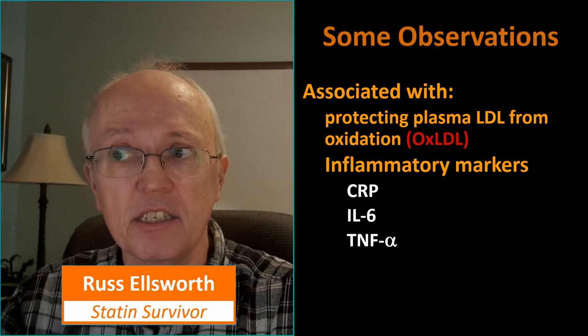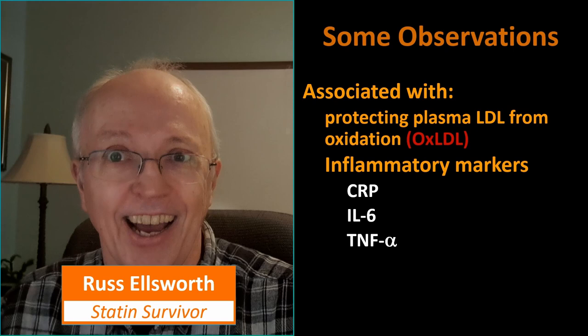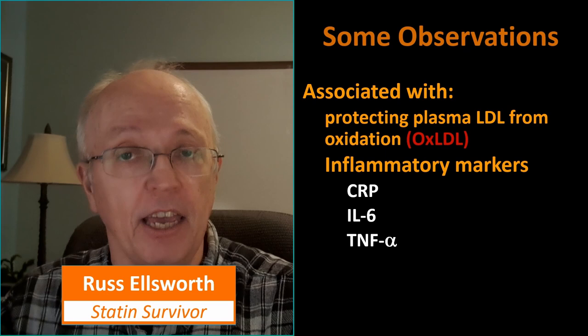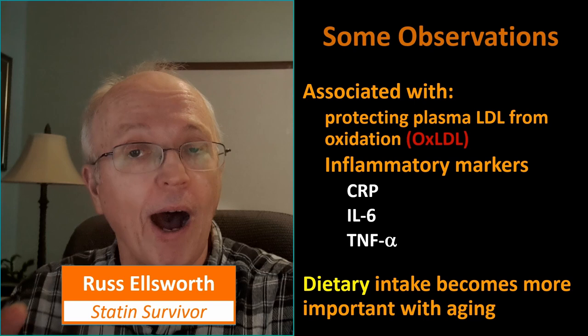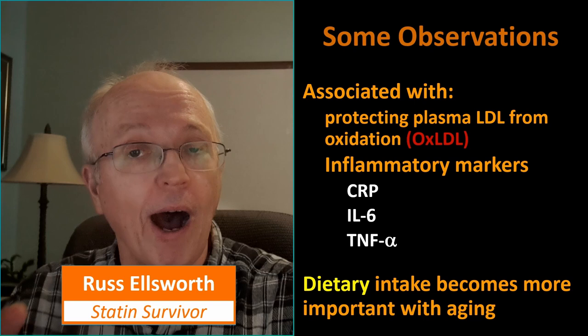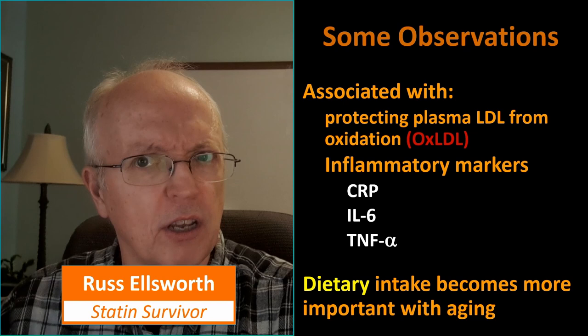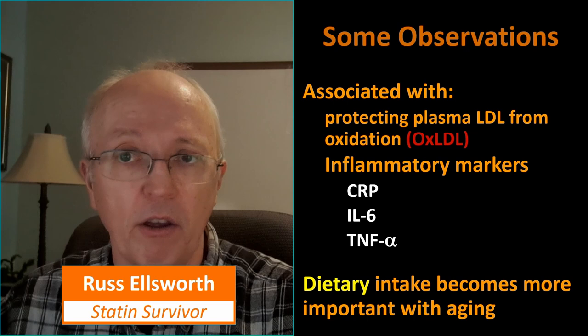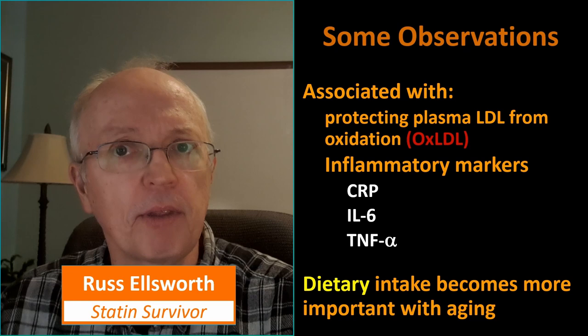CoQ10 supplementation reduces inflammatory markers such as C-reactive protein, interleukin-6, and tumor necrosis factor alpha — these are factors that indicate you've got inflammation in your body. CoQ10 from dietary intake becomes more important with aging as endogenous production decreases. I wasn't sure why it decreased — I thought maybe we didn't absorb it as well as we got older, but this paper indicates it is the endogenous production that decreases. Our cholesterol doesn't specifically decrease unless we're taking statins, so I wonder if there's more to it than that simplified diagram, or if our bodies just don't get as good at synthesizing it.